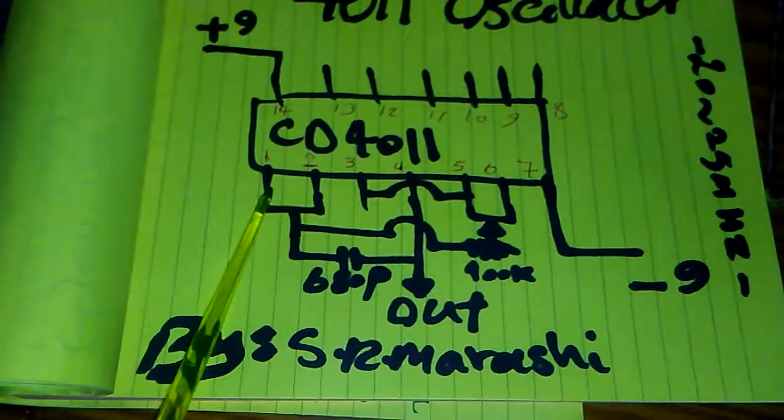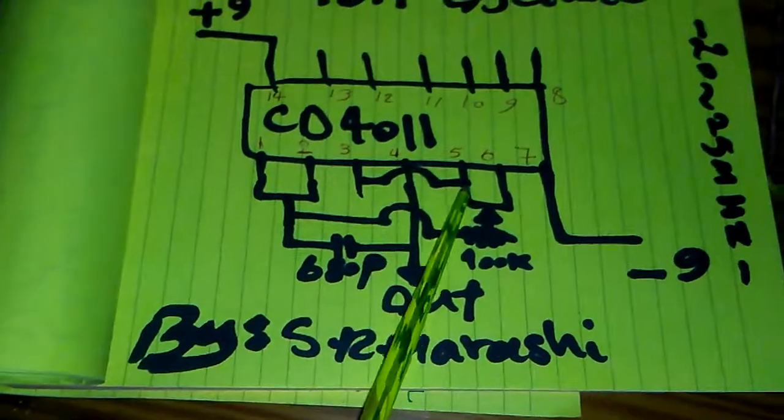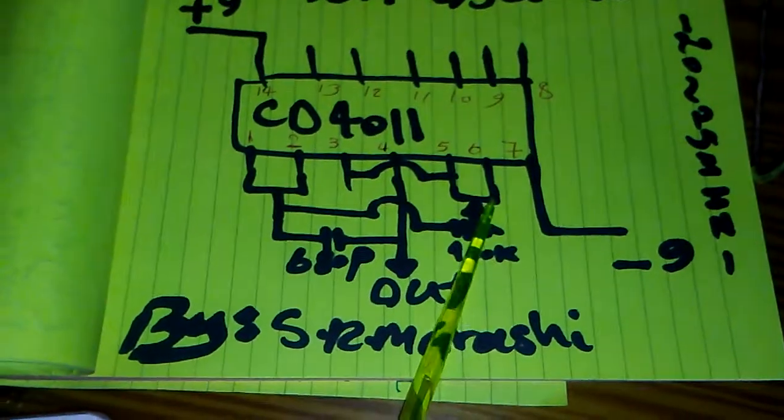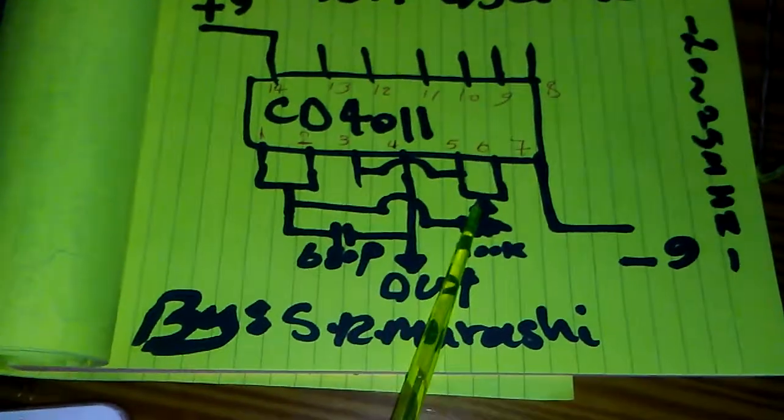Pin 1 and 2 should be looped to each other. Pin 5 and 6 loop. Pin 3 should be connected to pin 5 and 6 directly. That's it.